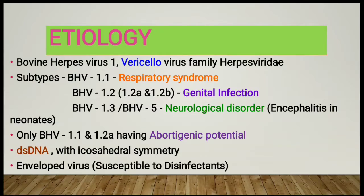This disease is mainly caused by bovine herpes virus 1, which belongs to the genus Varicellovirus and family Herpesviridae. This virus has three subtypes: bovine herpes virus 1.1, which causes respiratory syndrome; bovine herpes virus 1.2, subdivided into 1.2a and 1.2b, which causes genital infections; and bovine herpes virus 1.3. Bovine herpes virus 5 causes neurological disorders like encephalitis in neonates. Only bovine herpes virus 1.1 and 1.2a strains have abortigenic potential, meaning they cause abortion.